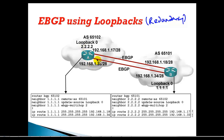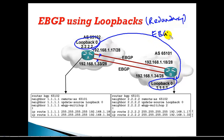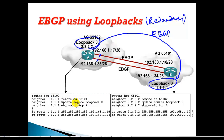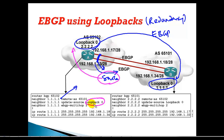To provide redundancy in eBGP neighborship, we don't use physical interfaces. Instead, we establish neighborship between loopback-to-loopback interfaces, which never go down. The commands are similar to what we did in iBGP using loopbacks. The first command is 'neighbor 1.1.1.1 remote-as 65101'. By default, the exit interface is the source address, but we need to change it to our loopback using the update-source command.